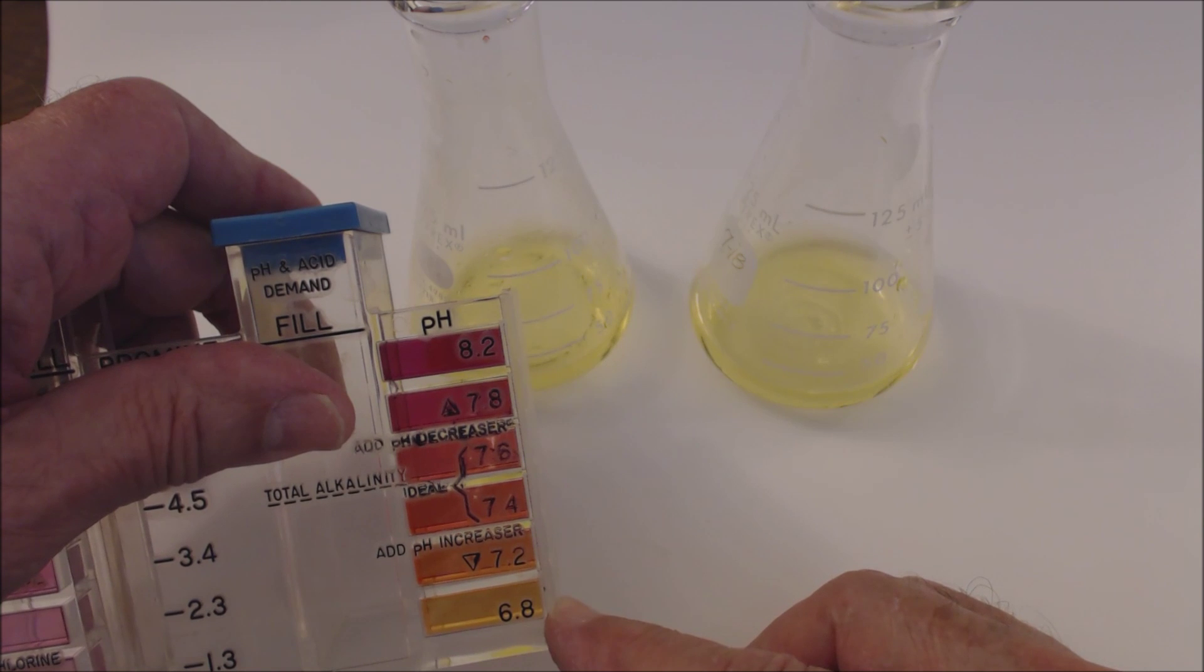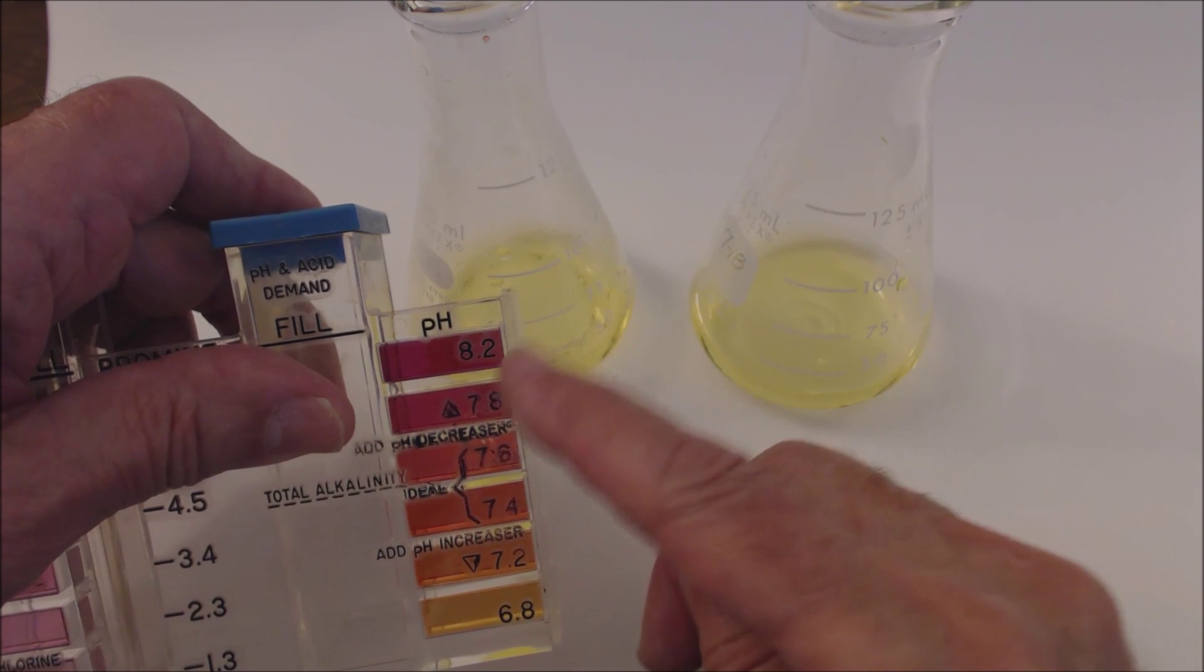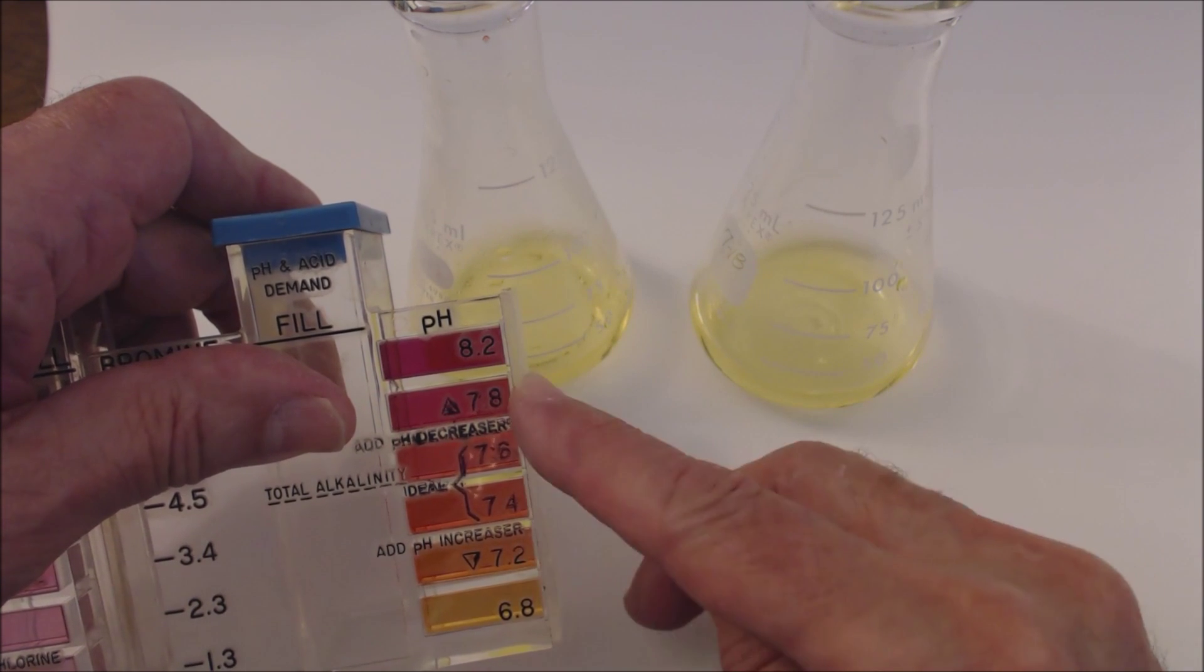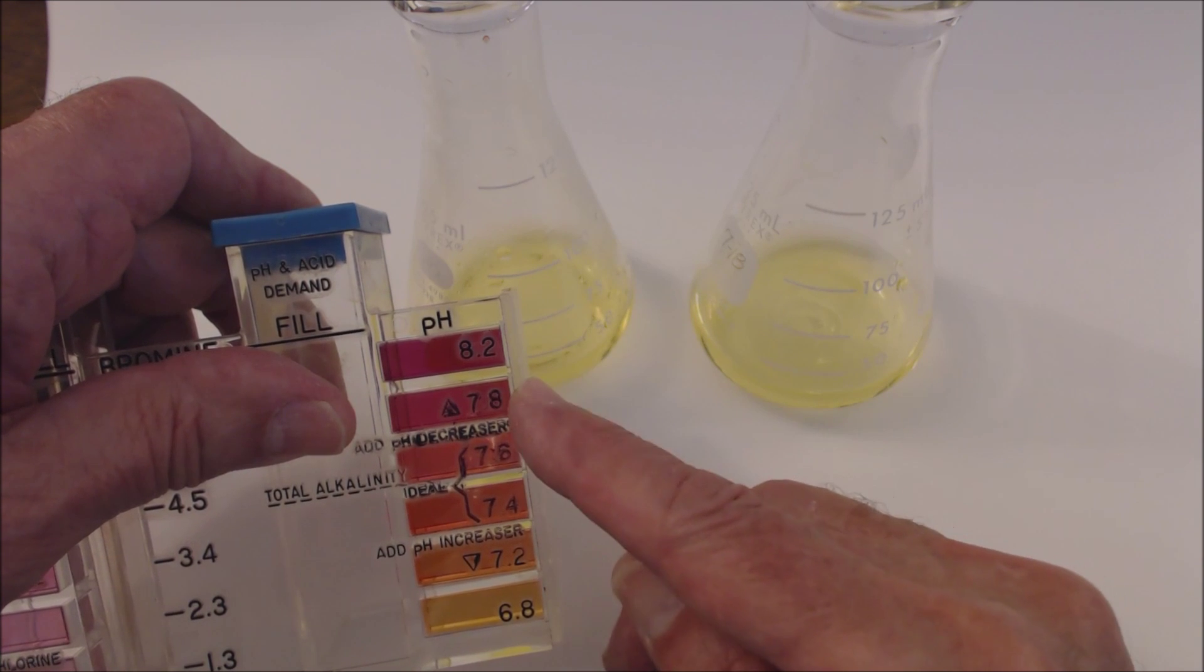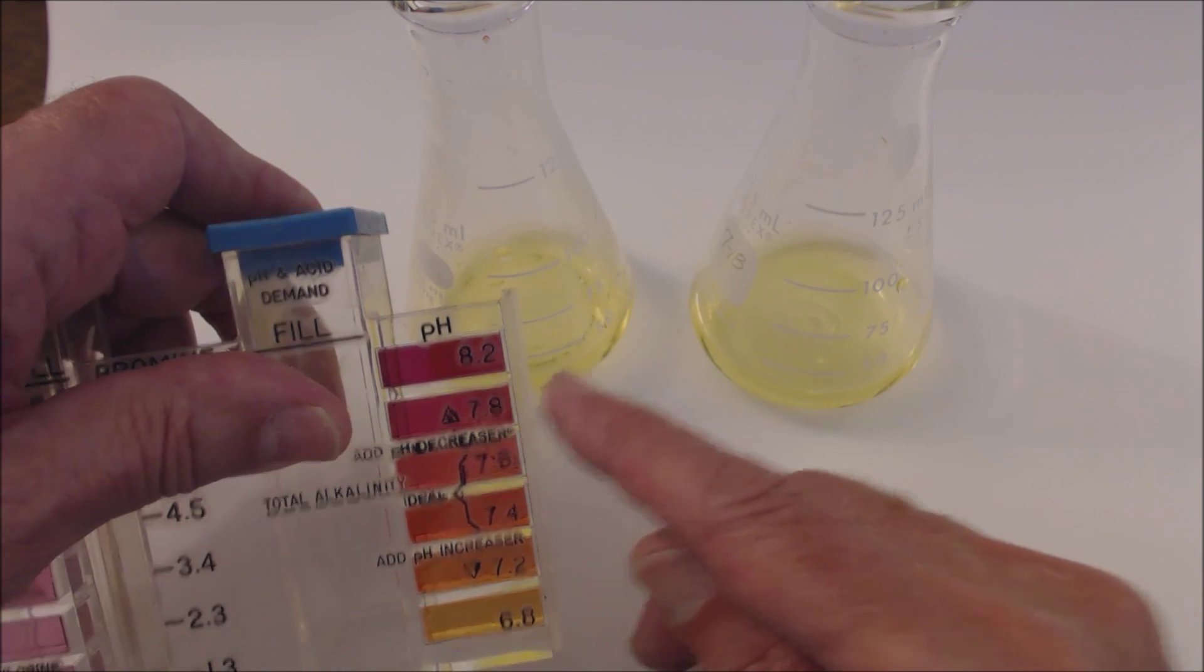Phenol red is yellow in the acid range, pink in the base range, and it makes a transition from yellow to orange to reddish between 7.2 and 7.8.